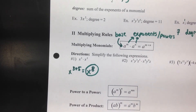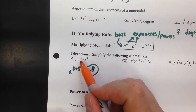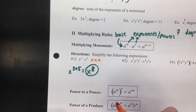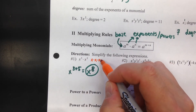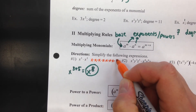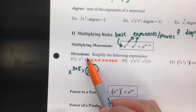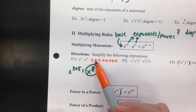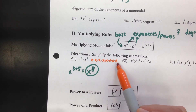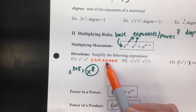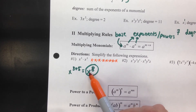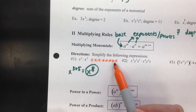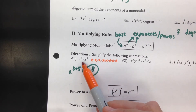The reason this works: x to the third means x times x times x, and x to the fifth is x times x times x times x times x. The exponent tells you how many times a number or variable multiplies itself. If you write it all out, you count eight x's multiplying together, so it's x to the eighth. We don't want to do that every time, so we just add the exponents.